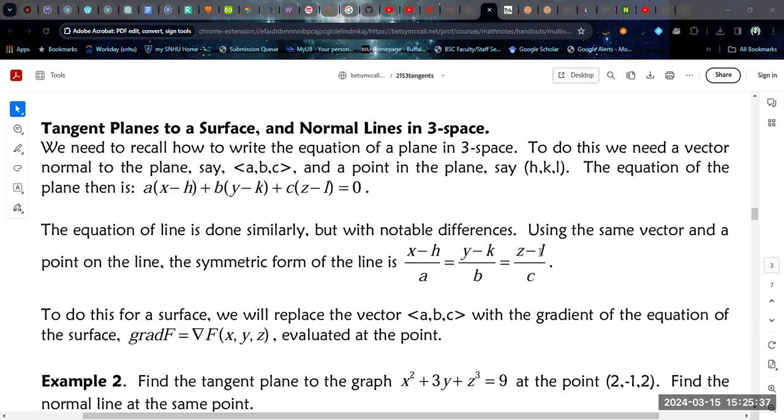But again, if any of these coefficients are 0, you have to do that or you're not going to get a line. You're going to get a plane because if you leave out the one that's division by 0. But if they're all non-zero, then this is perfectly fine.